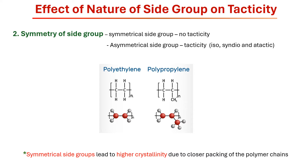Whereas if the polymer contains symmetrical side groups — for example, the hydrogen atom in polyethylene — they do not contribute to tacticity. But symmetrical side groups lead to a higher degree of crystallinity as they allow closer packing of polymeric chains.